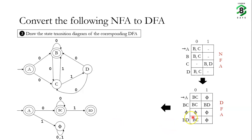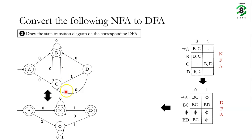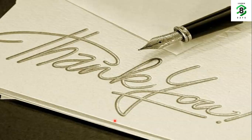On state phi, whether we receive input 0 or input 1, we remain in the same state since it is the trap state. In state BD, if we receive input 0 we go to state BC, and if we receive input 1 we go to trap state phi. This is the state transition diagram of the DFA for this NFA. Hence this NFA and this DFA are equivalent and same in power. In the next class we will practice another problem on NFA to DFA conversion. Thank you.